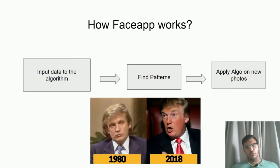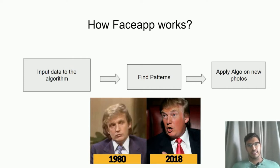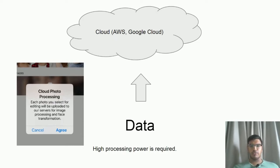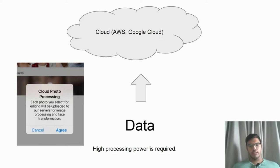If you input any new photo, it will generate output according to that algorithm. Now, as you can see, there are also filters on Instagram and Snapchat — like the face filter on Snapchat. Those filters are processed on your mobile phone only; they don't have to upload photos to servers.